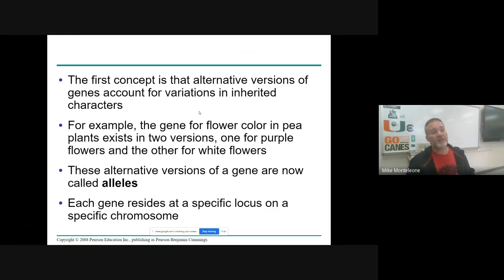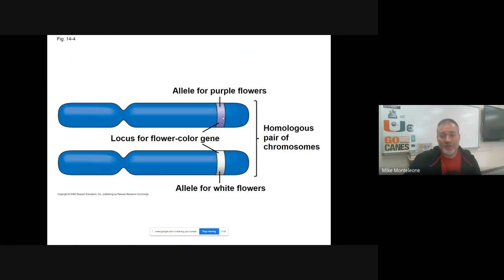Mendel predicted that there were factors that were passed on from parents to offspring. These factors we now call genes. And there were different versions of these genes, these factors, that caused the plants to have different traits. So in other words, a purple flower factor or gene, a white flower factor or gene. And he called these versions of the gene alleles. I don't know if Mendel came up with that term, but they are called alleles. And each allele is on a specific location on a chromosome. And that location is known as a locus. So the locus is the location of a particular gene on a chromosome. Plural of locus is loci.